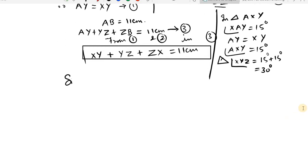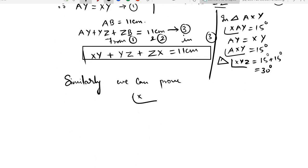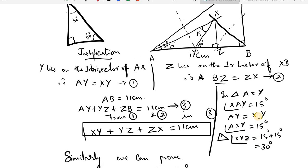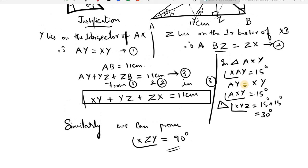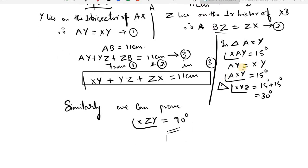Similarly, we can prove that angle XZY equals 90 degrees — I'll leave that to you. Instead of triangle AXY, take triangle XBZ and apply the same method. Once that is done, it is clear that in triangle XYZ, angle XYZ is 30 degrees and angle XZY is 90 degrees, and the construction is hence justified.